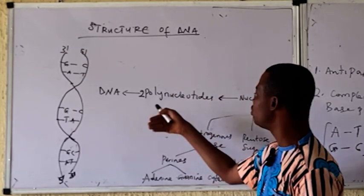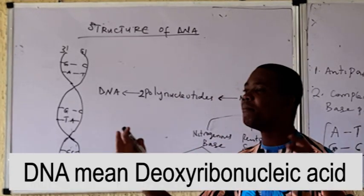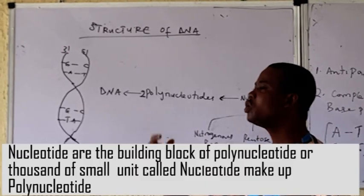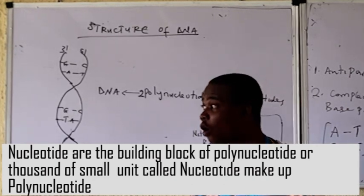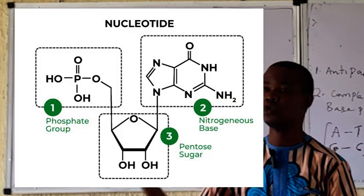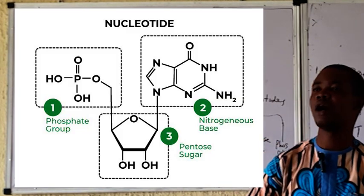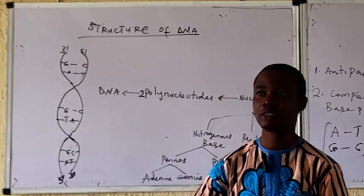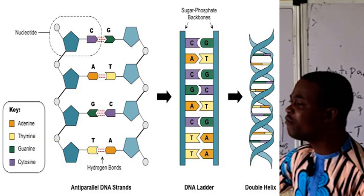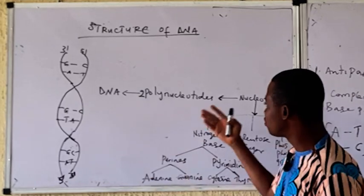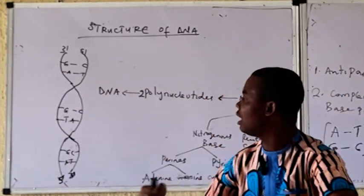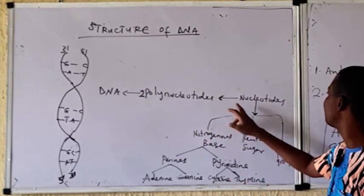Polynucleotide chains are made up of nucleotides. Nucleotides are monomers of polynucleotides — the same way amino acids are monomers of proteins. So for us to have DNA, it starts from nucleotides. When we have many nucleotides coming together, they form polynucleotides. When we then have two chains of polynucleotides wrapped together, it forms DNA. So DNA starts from nucleotides.